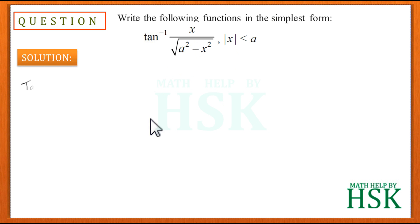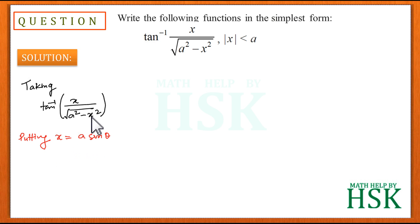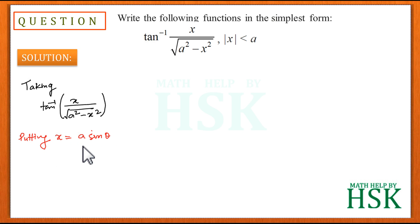To write this function in the simplest form, I take tan inverse of x upon square root of a square minus x square. Looking at a square minus x square, I make the substitution x equal to a sine theta. When we have a square minus x square and need to simplify with inverse trigonometric functions, x equal to a sine theta or x equal to a cos theta are both valid substitutions.